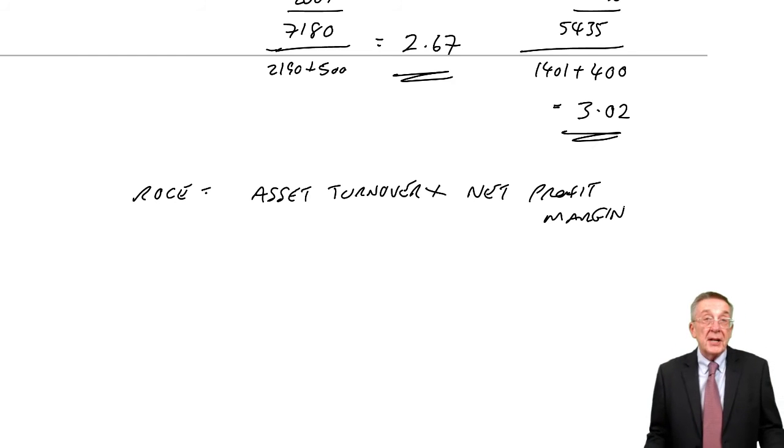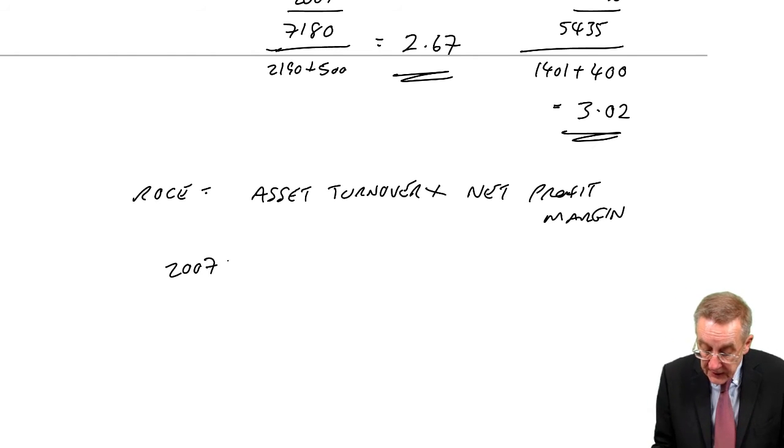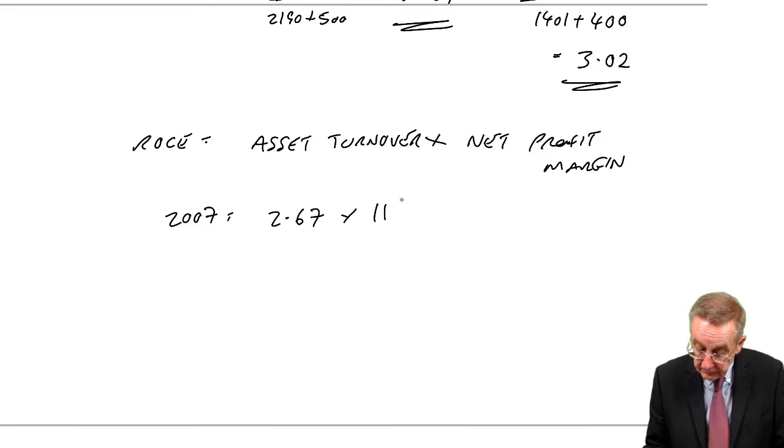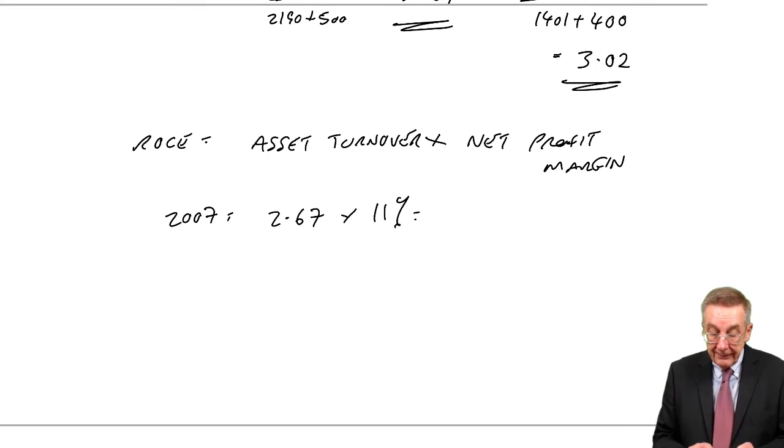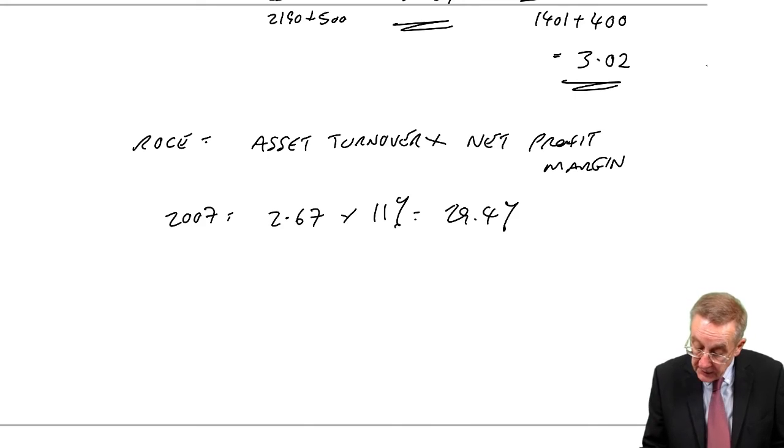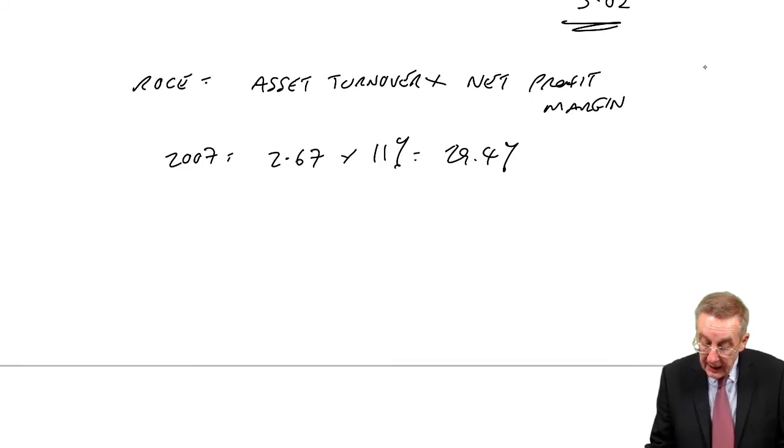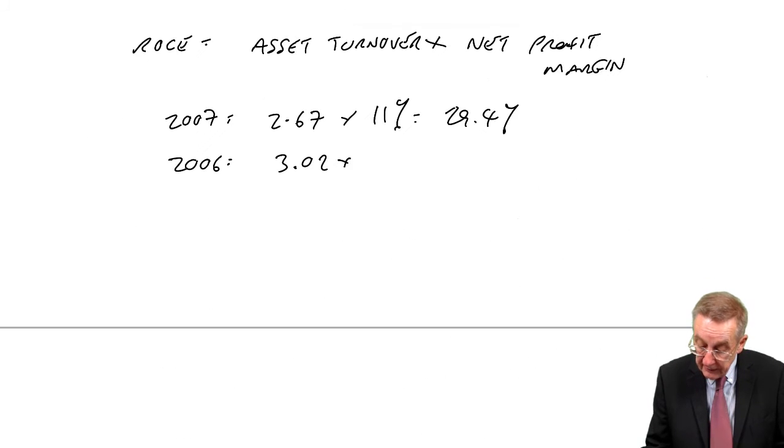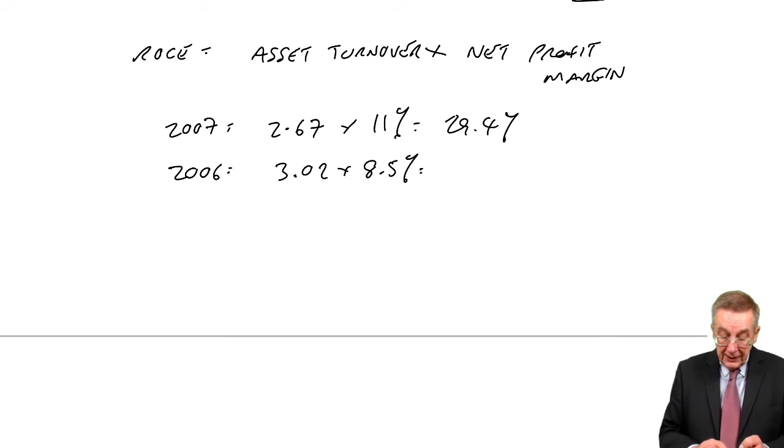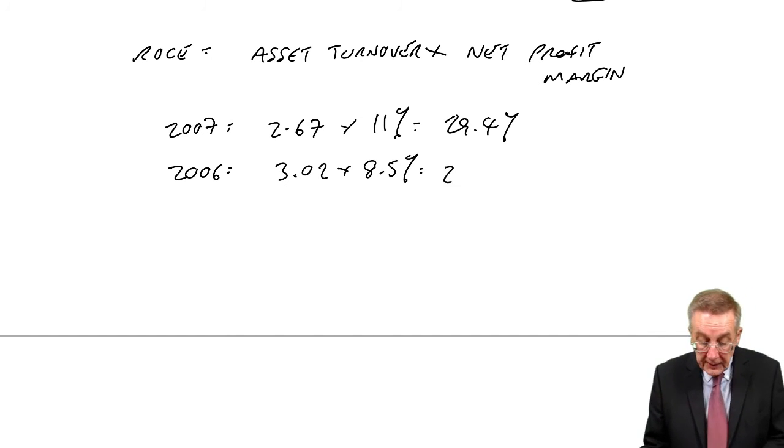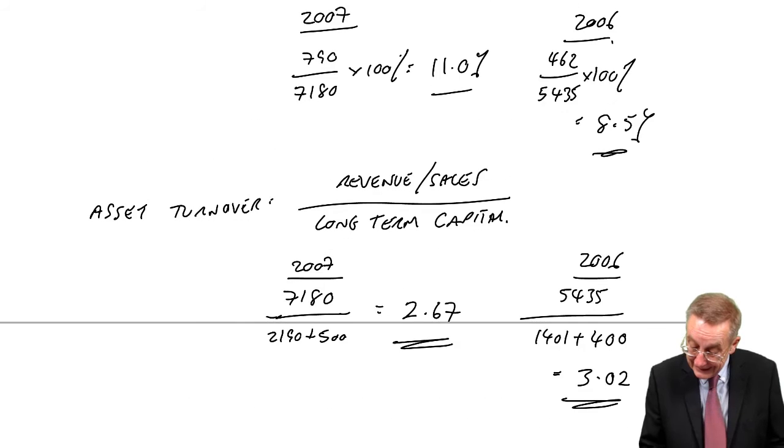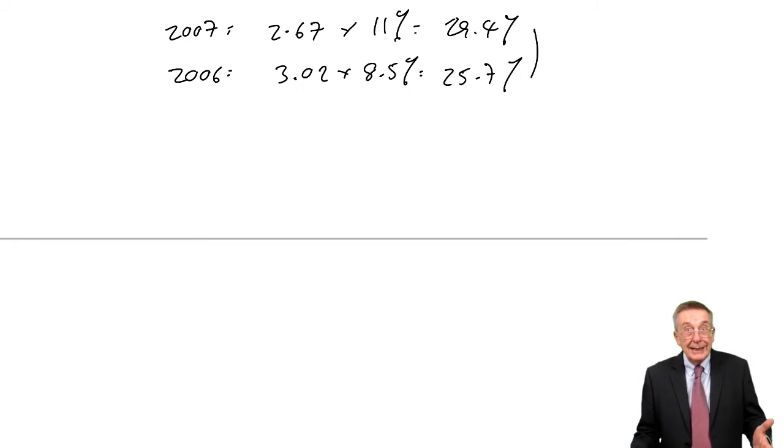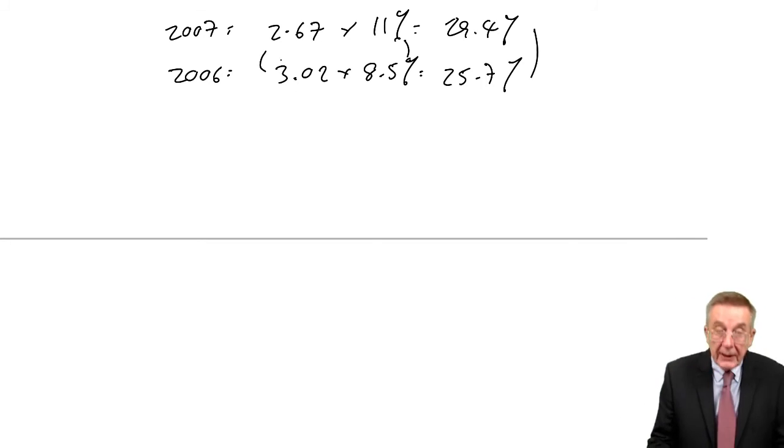Let's just check. Although I appreciate there's a bit of rounding here, so it may not be precise. But you see in 2007, asset turnover was 2.67 and the net profit margin was 11%, which comes to 29.4%. And what was the return on capital employed? 29.4%. In 2006, asset turnover 3.02, net profit margin 8.5%, which comes to 25.7%. So you know, overall it's increased, which is good. What you're aiming for is to increase either or both of those.